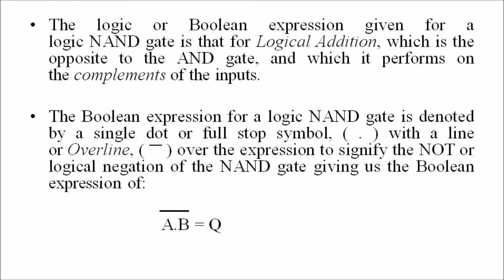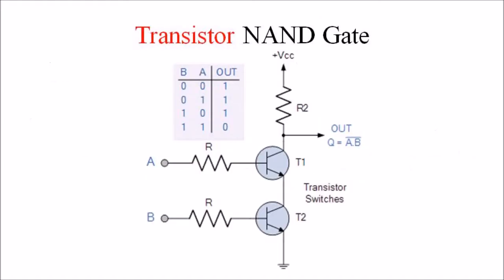We can define the operation of a two-input logic NAND gate as: if either A or B are not true, then Q is true. This NAND gate can be implemented using transistors. A simple two-input logic NAND gate can be constructed using RTL resistor-transistor switches connected together as shown in this figure, with the inputs connected directly to the transistor bases. Either transistor must be cut off for an output at Q.